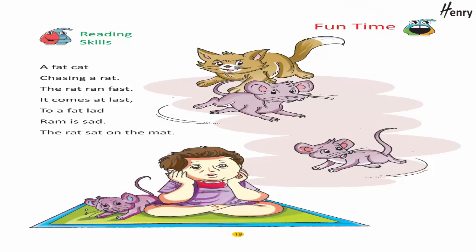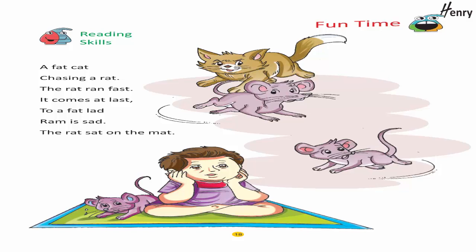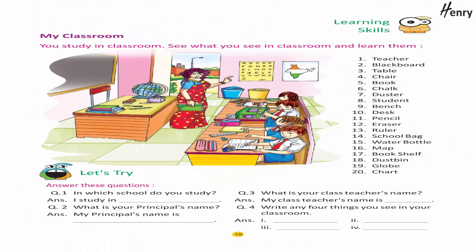Reading skills: A fat cat chasing a rat. The rat ran fast. It comes at last to a fat lad. Ram is sad. The rat sat on the mat.